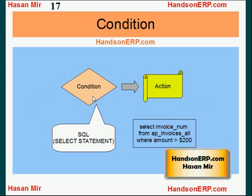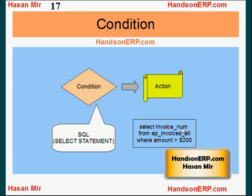Let's talk about conditions. We understand that we specify a condition and define actions that take place when the condition is met. How do you define conditions? You define conditions as SELECT statements. Don't worry if you're not technical — we are not writing complicated programs. It's pretty easy to write basic SELECT statements, and that's all you need to define a condition. For example, this SELECT statement retrieves all invoice numbers from the AP_INVOICES_ALL table where the amount is greater than 200. You can display these invoice numbers in your email notification or pass them as parameters to reports. It's also very easy to find the column names you should be selecting from that table.